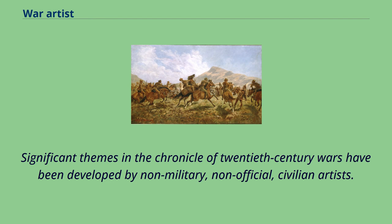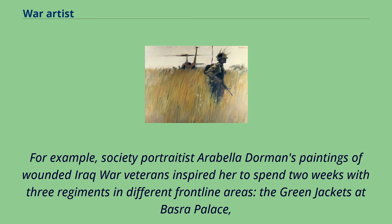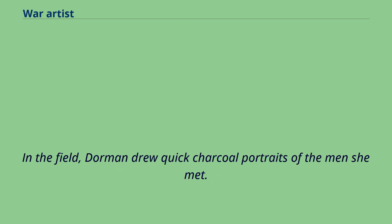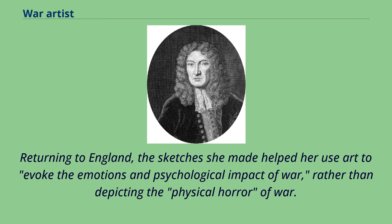Significant themes in the chronicle of 20th century wars have been developed by non-military, non-official, civilian artists. For example, society portraitist Arabella Dorman's paintings of wounded Iraq war veterans inspired her to spend two weeks with three regiments in different frontline areas — the Green Jackets at Basra Palace, the Queen's Own Gurkhas at Shaiba Logistics base, and the Queen's Royal Lancers in the Maison Desert. In the field, Dorman drew quick charcoal portraits of the men she met. Returning to England, the sketches she made helped her use art to evoke the emotions and psychological impact of war, rather than depicting the physical horror of war.